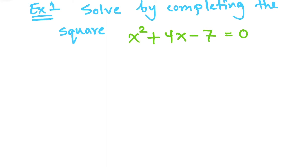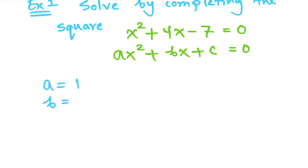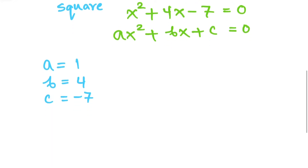Example 1 says: solve by completing the square. We have x² + 4x - 7 = 0. We want to solve this quadratic equation, which represents a parabola — we are looking for the x-intercepts, or roots. It's a quadratic equation, so we write it as ax² + bx + c = 0. Our a = 1 (no number in front of x²), b = 4, and c = -7. Be careful with the negative sign.